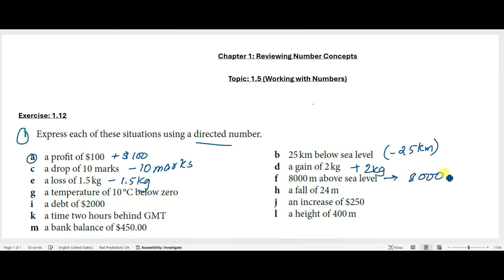Then 8000 meters above sea level—above sea level means we can write it as 8000 meters, because sea level is considered as level zero, so above that we'll represent it as it is.